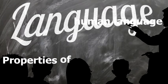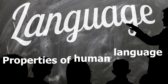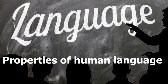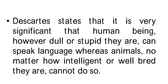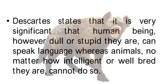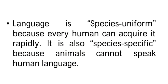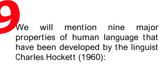Welcome to a new video about properties of human language. It is very significant that human beings, however dull or stupid they are, can speak language, whereas animals, no matter how intelligent or well-bred they are, cannot do so. Language is species-uniform because every human being can acquire it rapidly. It is also species-specific because animals cannot speak human language.